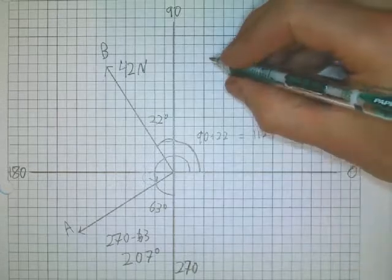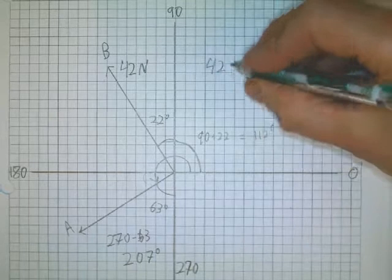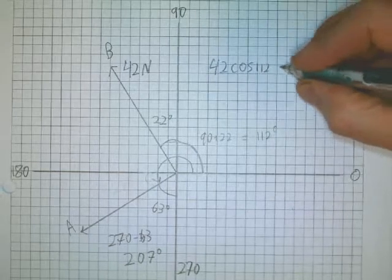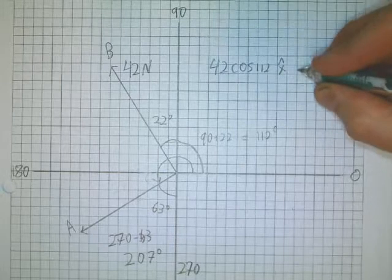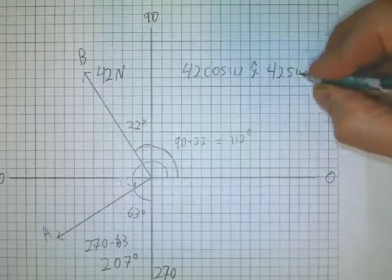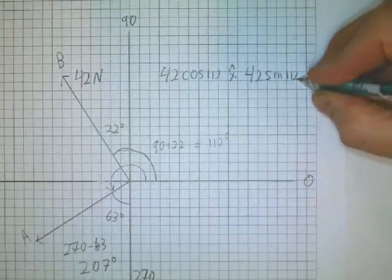Then we just simply find the components for B. B is going to be 42 cosine of 112, and that's going to be the x component. And it's going to be 42 sine of 112 in the y direction.